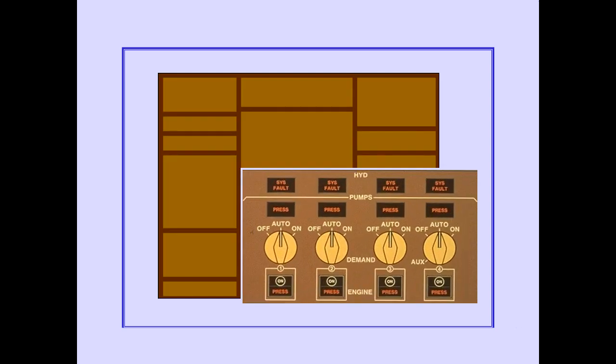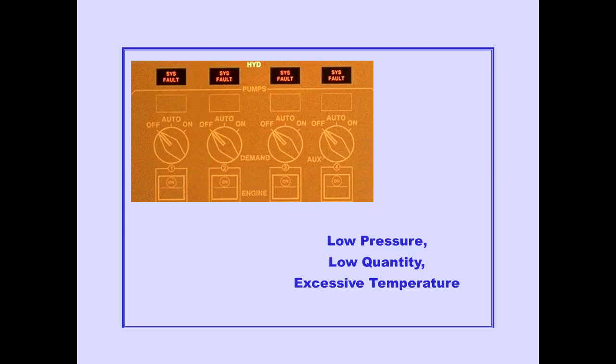The controls and indicators that operate the hydraulic systems are located on the overhead panel. A system fault light for each hydraulic system is located on the panel. These lights illuminate to indicate system low pressure, low fluid quantity, or excessive fluid temperature.